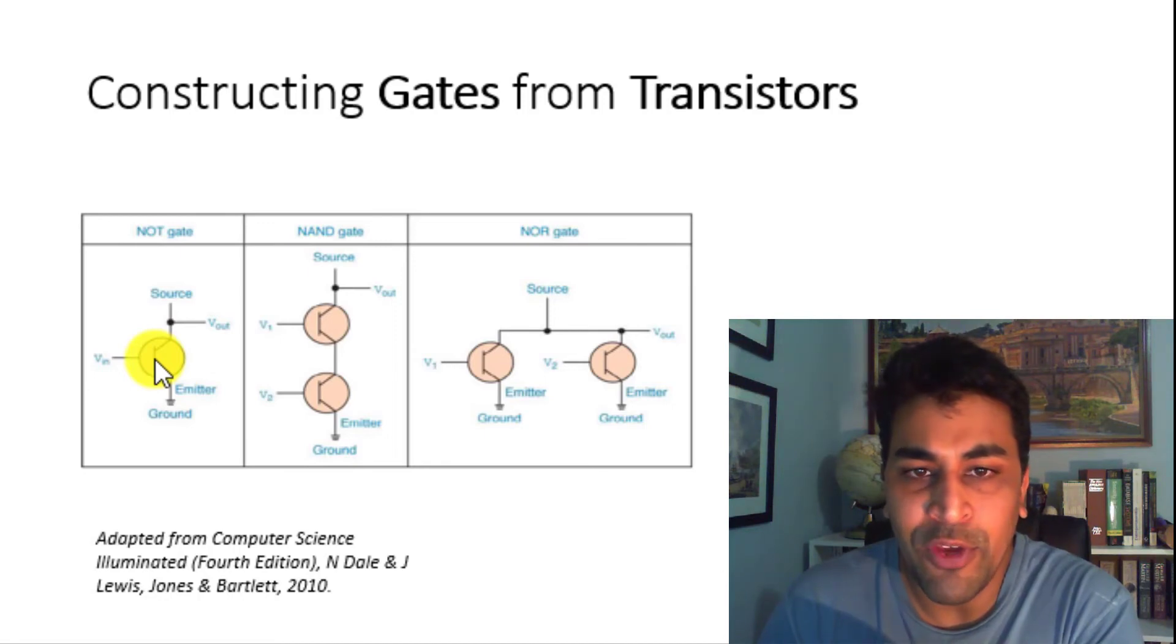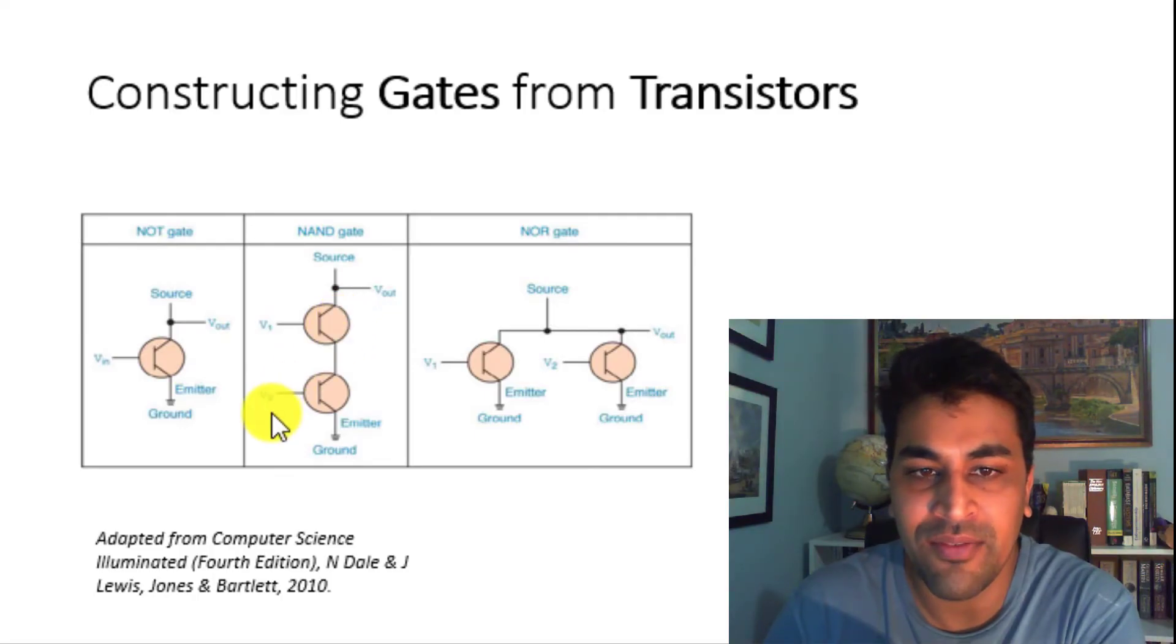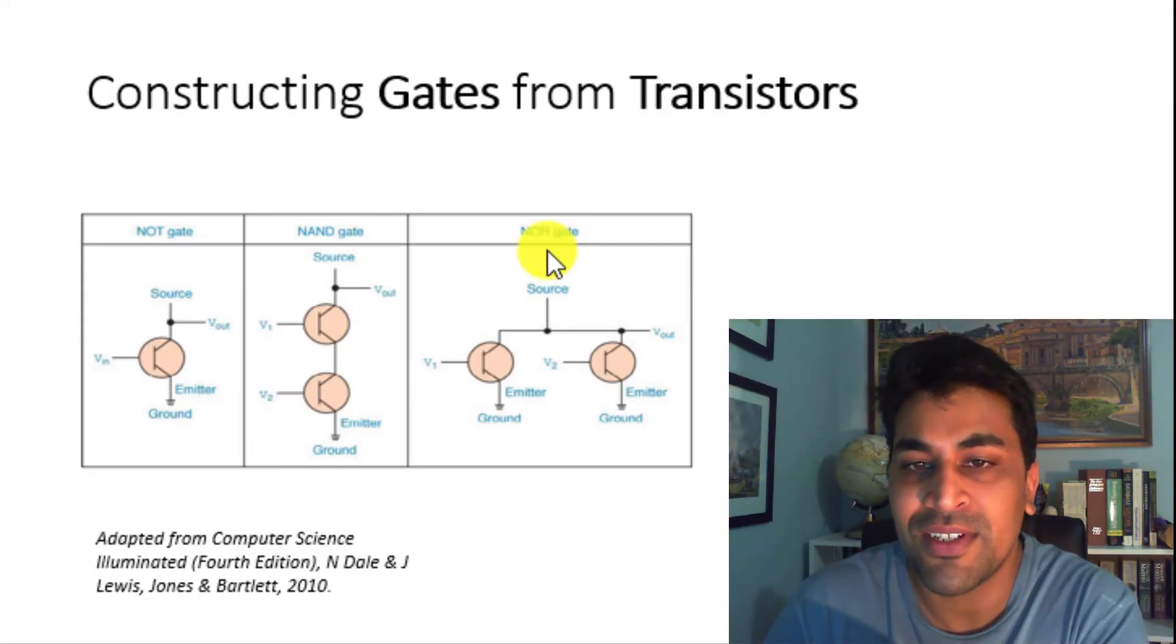For a NAND gate, if we connect our transistors in series, we can achieve the properties of a NAND gate, where V1 and V2 are A and B respectively, and the output is VOUT. For the NOR gate, if we connect our transistors in parallel, we can achieve the properties of the NOR gate, where V1 and V2 are A and B, and VOUT is the output of the NOR gate.